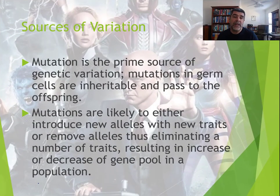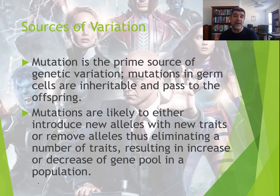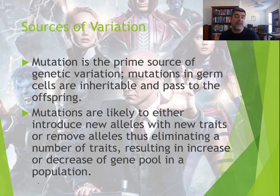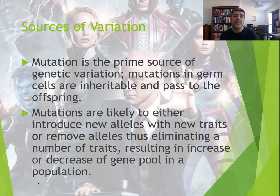In our last video we looked at the sources of variation, focusing on key aspects of meiosis — how independent assortment, random segregation, and crossing over, as well as sexual reproduction itself, can impact the type and range of variation in populations. Throughout this first section on genetic change, we've identified that mutation is a prime source of genetic variation.